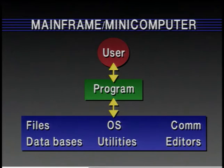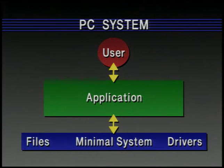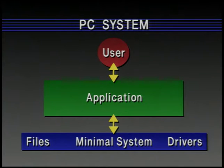Looking at how system software has evolved, we can see changes in structure leading toward object-oriented solutions. In early mainframe computers, the system had lots of fixed functionality and programs went to the system to get work done. When PCs came along, the system had very little functionality; users would buy an application that contained almost all the functionality they wanted — a classic example of you get what you pay for.